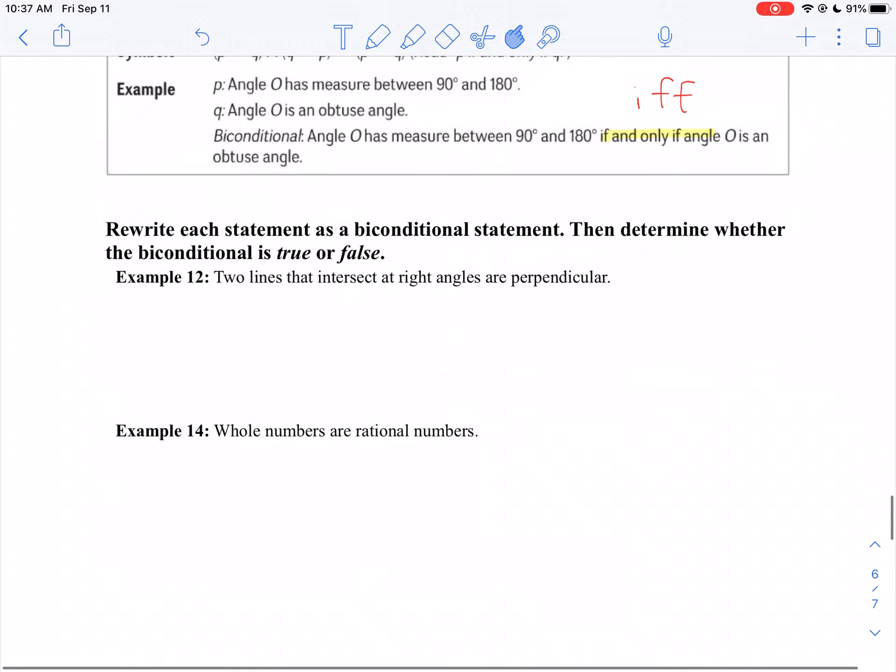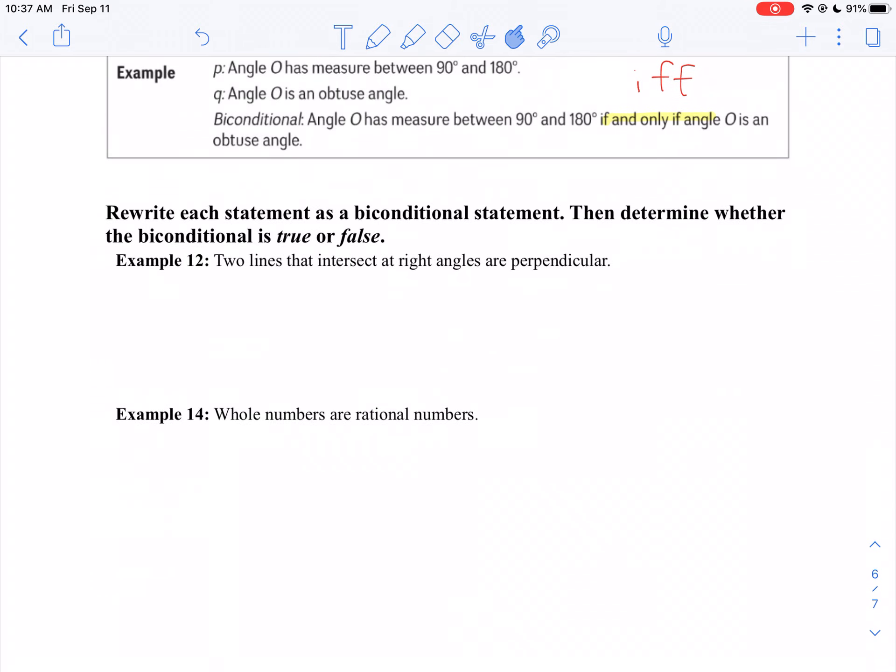So let's take a look here on example 12. It says two lines intersect at right angles or are perpendicular. Since you're doing a biconditional, it doesn't matter which one you start with. You can start with either statement.